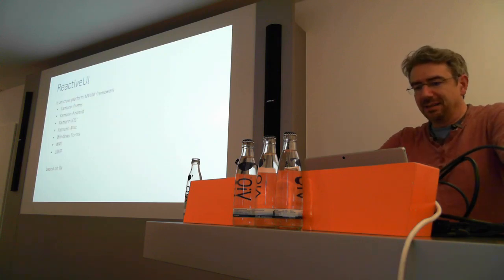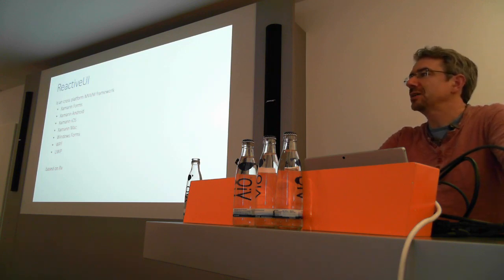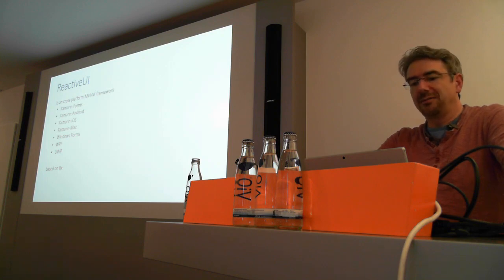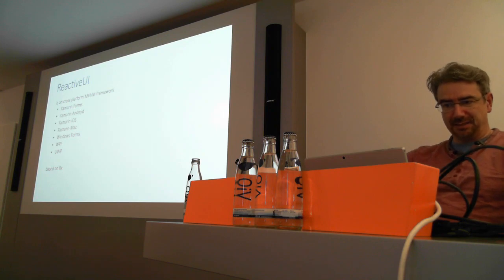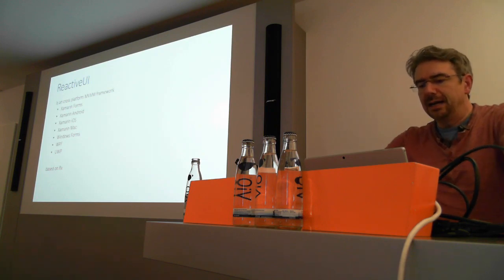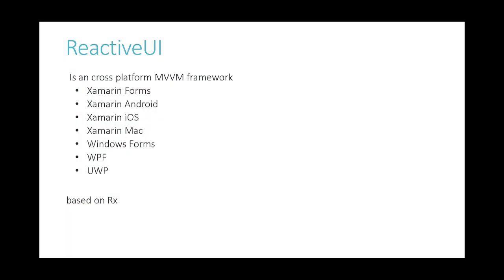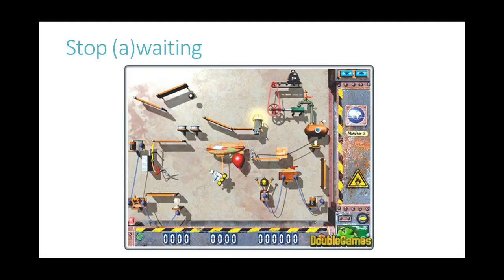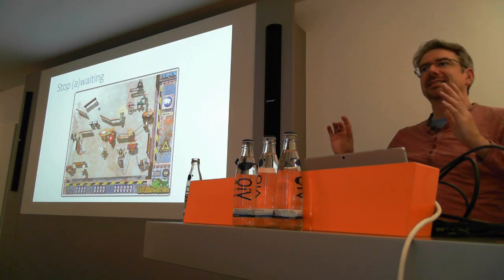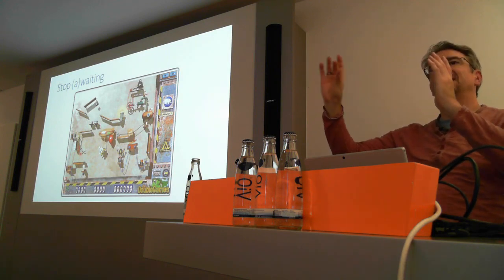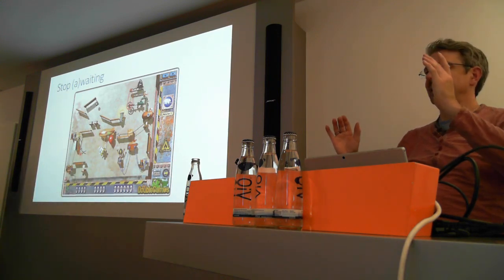Now we get to Reactive UI. Reactive UI is a cross-platform MVVM framework based on Rx, available for almost any platform — including Tizen now. It makes life much easier because it brings this subscription model on events to your view-to-view-model communications. In general, stop awaiting — you have a lot of possibilities, event traps that just react. You define in one place what type of events your UI should react to, in a very concise and clear manner.